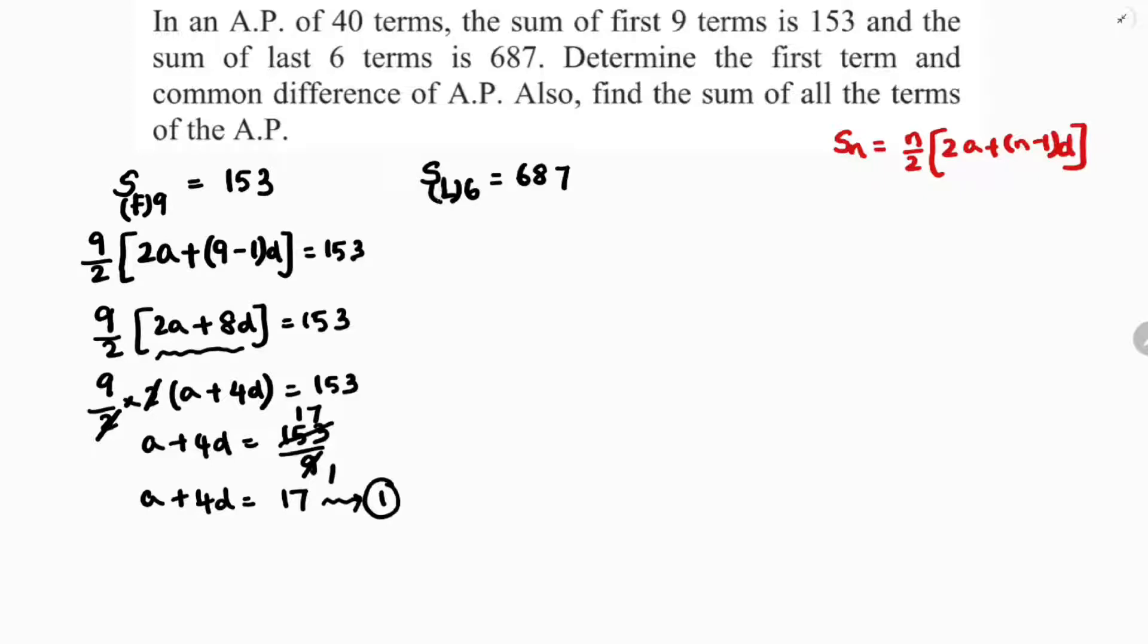Now here, sum of last 6 terms. Total terms are 40, so sum of last 6 terms, when total terms are 40, you can do S40 minus S34. If you take out 34 terms, you'll get sum of last 6 terms. But instead of that, you can simplify in another way. The total terms are like last term is 40, then 39, then 38, 37, 36, 35.